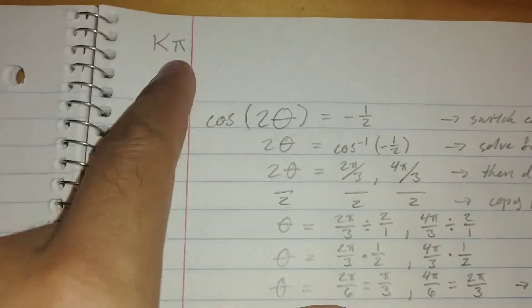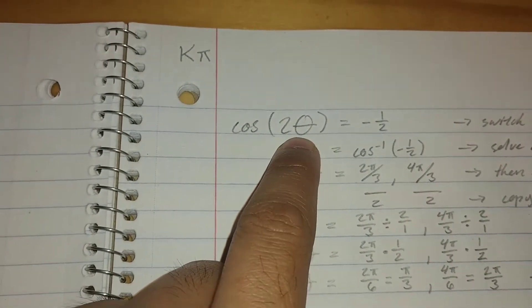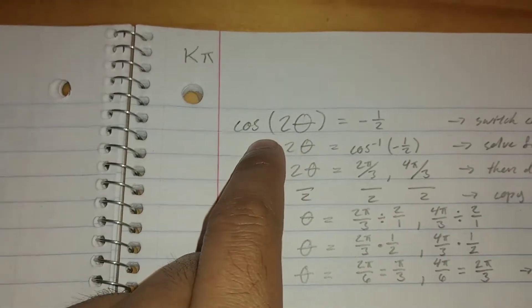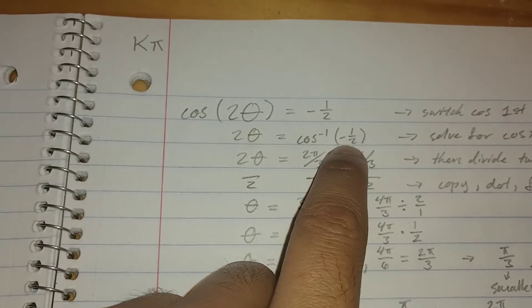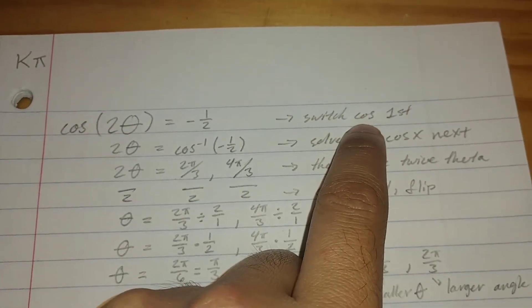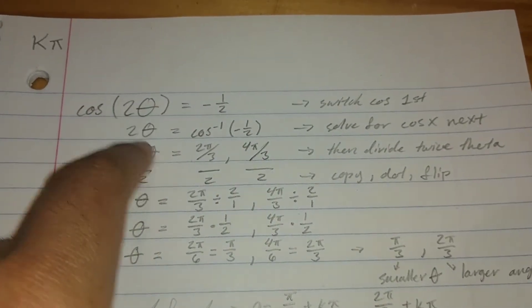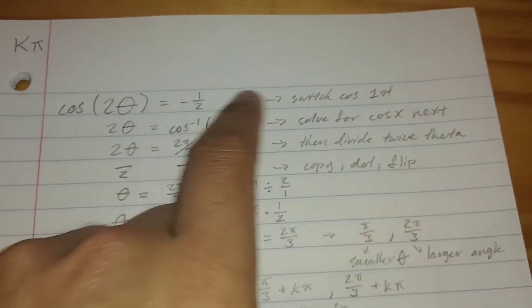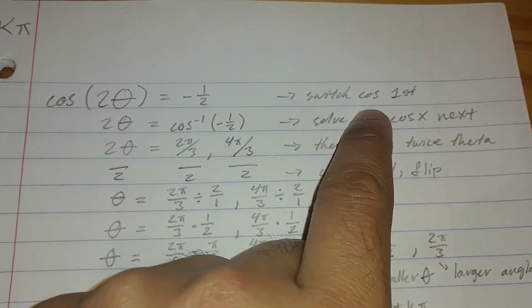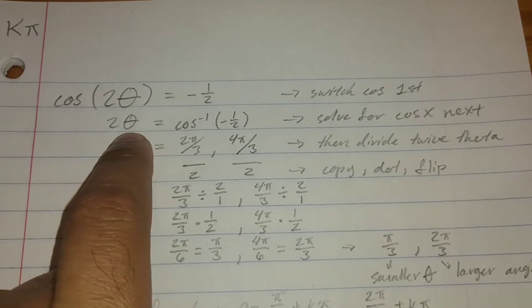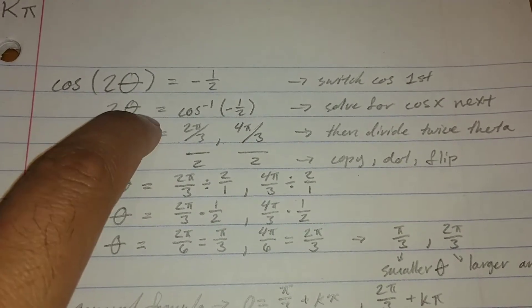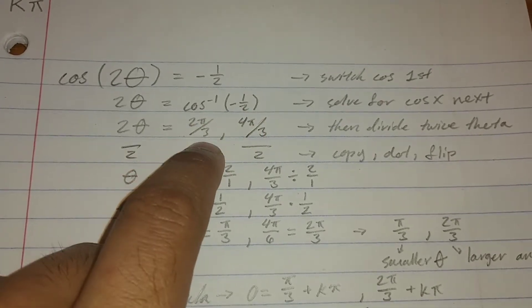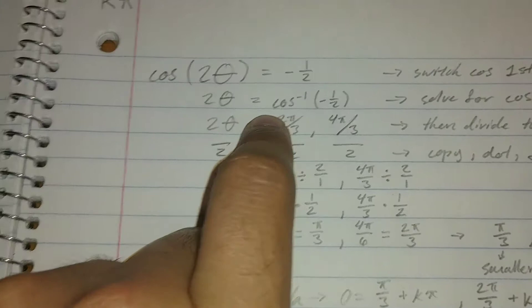Now, kπ. This comes into play instead of 2kπ when you have twice theta — a double angle, as it's actually called. So, cosine of a double angle equals negative one half. Use arc cosine or inverse cosine to multiply both sides out and get the angle. What you want to do is switch the cosine to the other side first, because you're trying to get theta by itself — you could say cosine of 2x. You're trying to get the angle by itself, so you switch the cosine first — that's the key. You don't do the inner part right away. Then you solve for cosine. A lot of people will divide by 2 right away to try to get theta by itself — don't do that. Solve for cosine first. Then you get the two angles where cosine is negative one half.